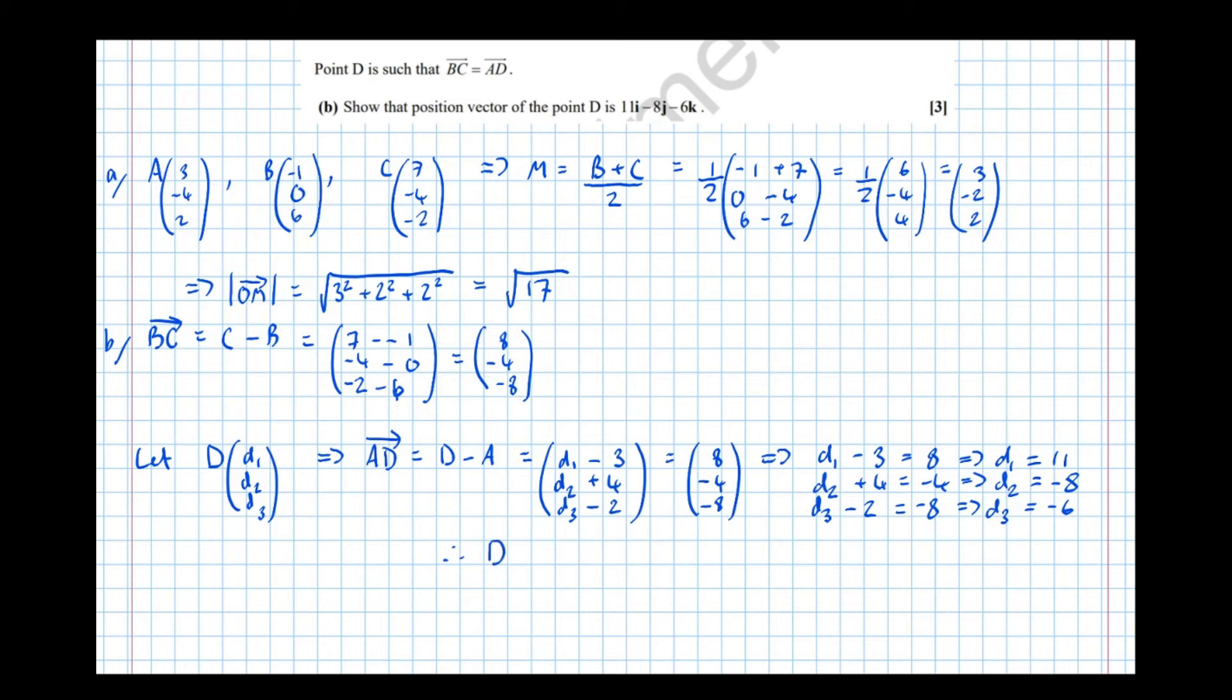therefore the point D is equal to, well the I component as we can see here is 11, the J component minus 8 and the K component minus 6, therefore it's 11 lots of I minus 8 lots of J minus 6 lots of K and it's important to give the answer in the format required, the format that they ask for in order to gain all the marks.